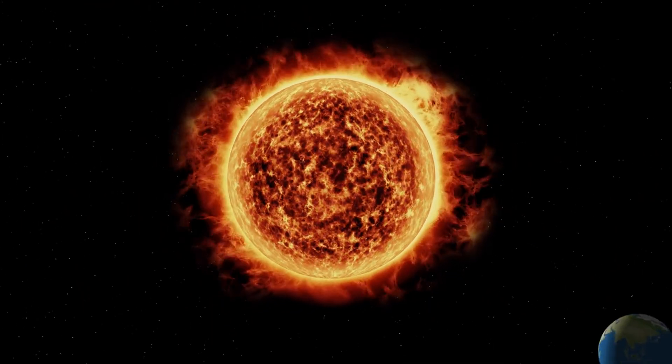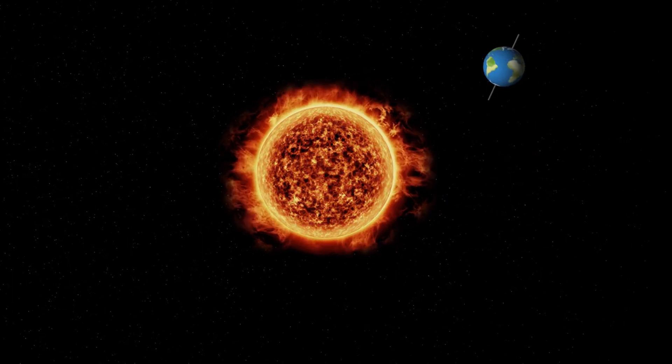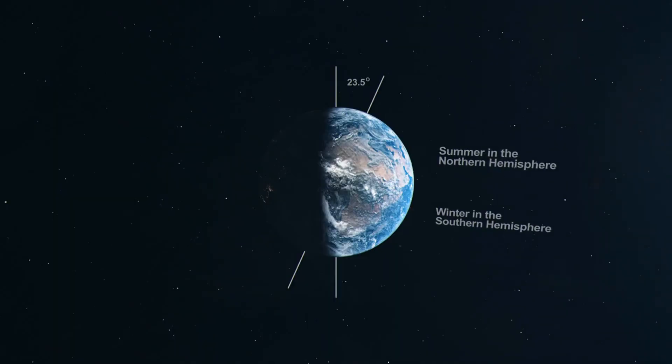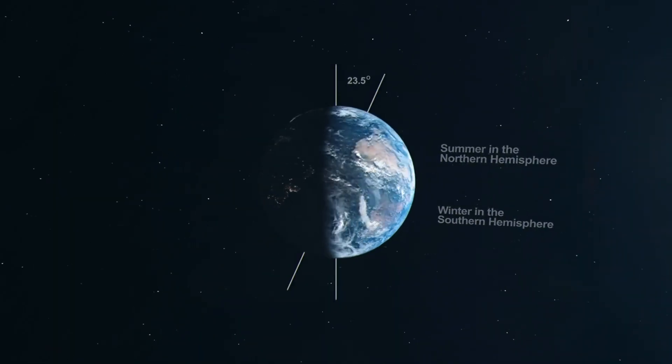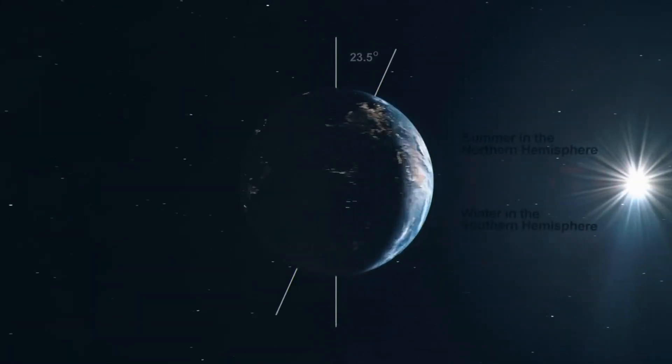Hi, this is Marcy of EarthSky. The March equinox is an annual event in Earth's orbit around the Sun. It happens because Earth is tilted on its axis with respect to our orbit. Earth's tilt gives us the equinoxes and solstices.